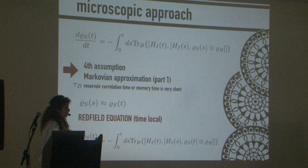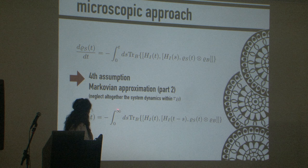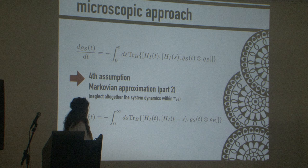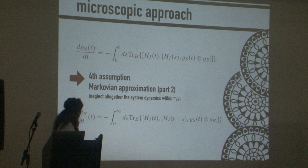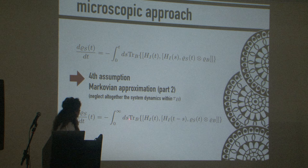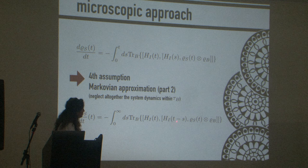Then you do another approximation: you extend the integral from zero to infinity. Sending t to infinity means you're coarse-graining in time, neglecting completely any correlations between system and bath. This is the second part of the Markovian assumption. And the fifth assumption is the secular approximation — also known as the rotating wave approximation — which concerns clear differences in timescales.